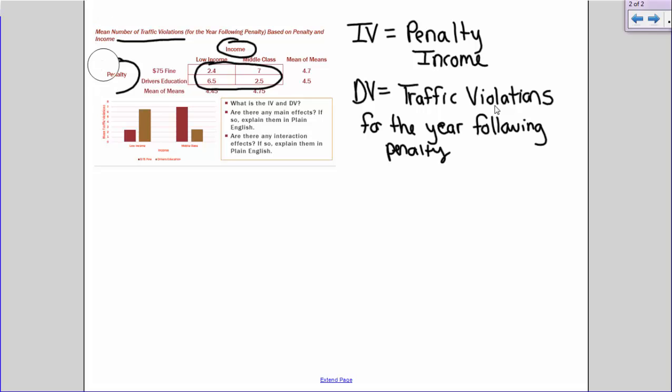Alright. So now we want to look at, are there any main effects here? Well, I'm looking at this and I say, okay, well, is there much of a difference in the mean number of traffic violations for all of those people in the $75 fine condition versus the driver's ed condition? Not really. Those numbers are pretty close. Then when I go down here, so is there a big difference in the number of traffic violations for those with low versus middle income? Not really. So I would say there's really no main effects here.